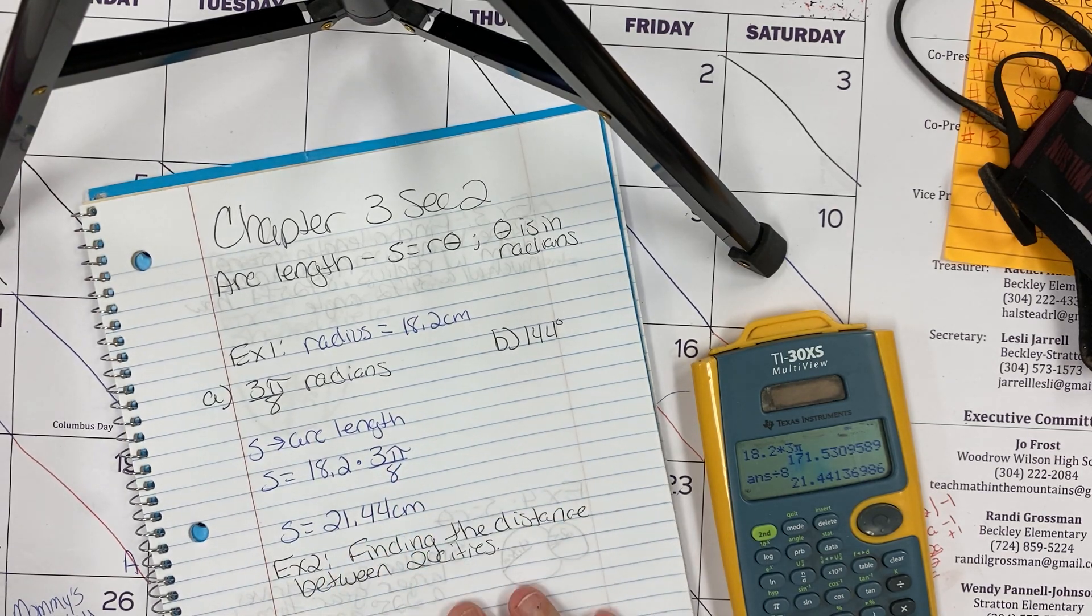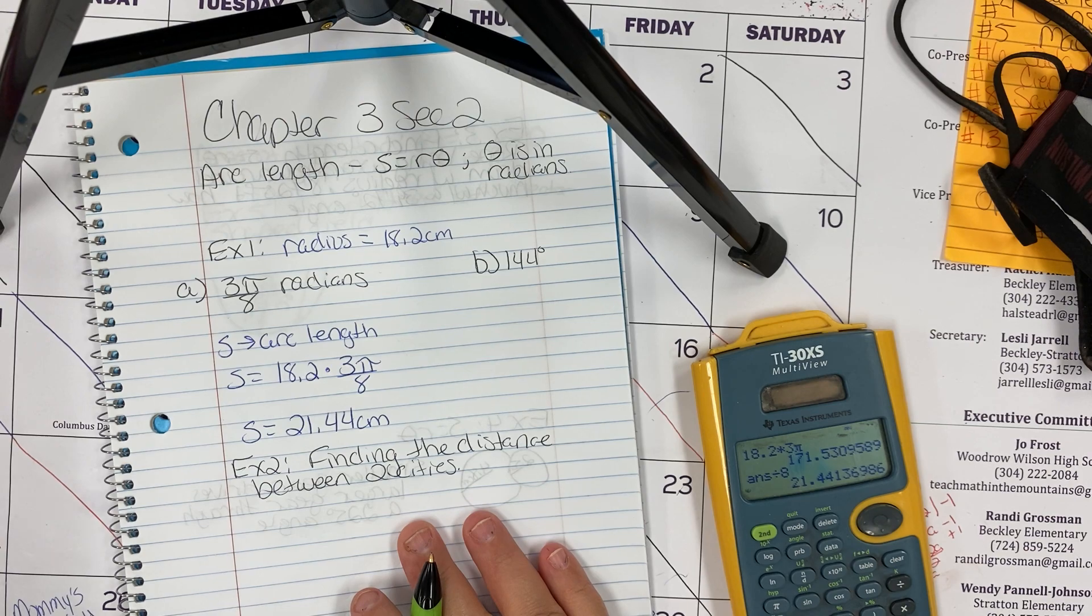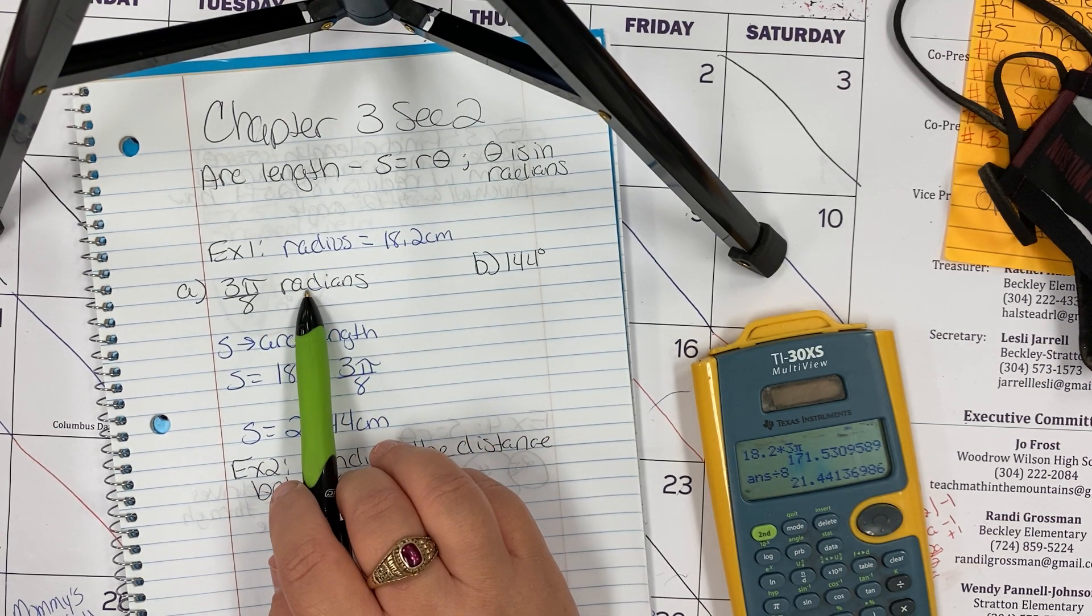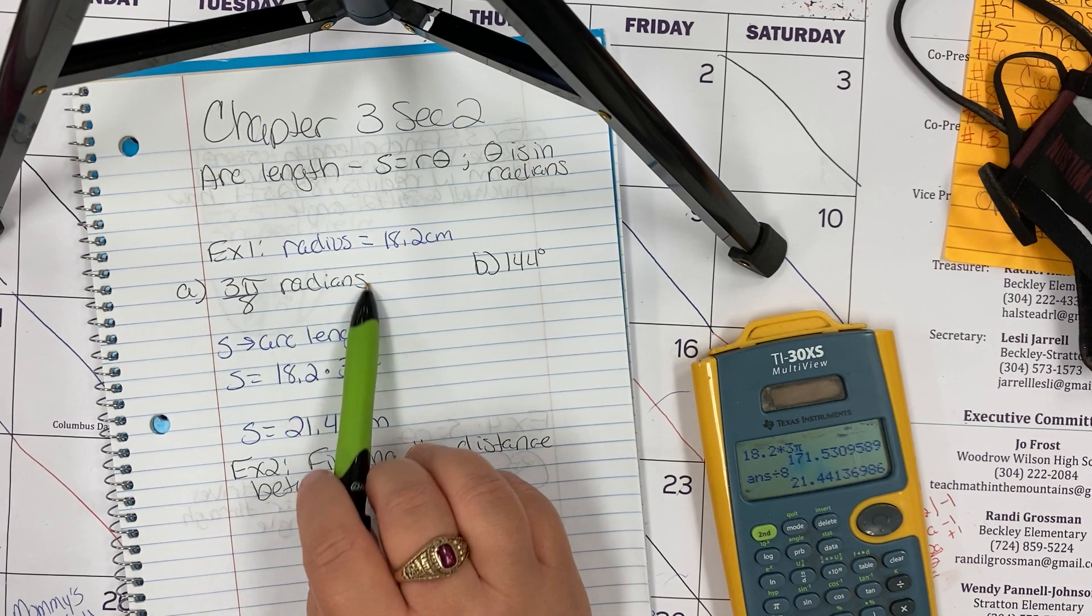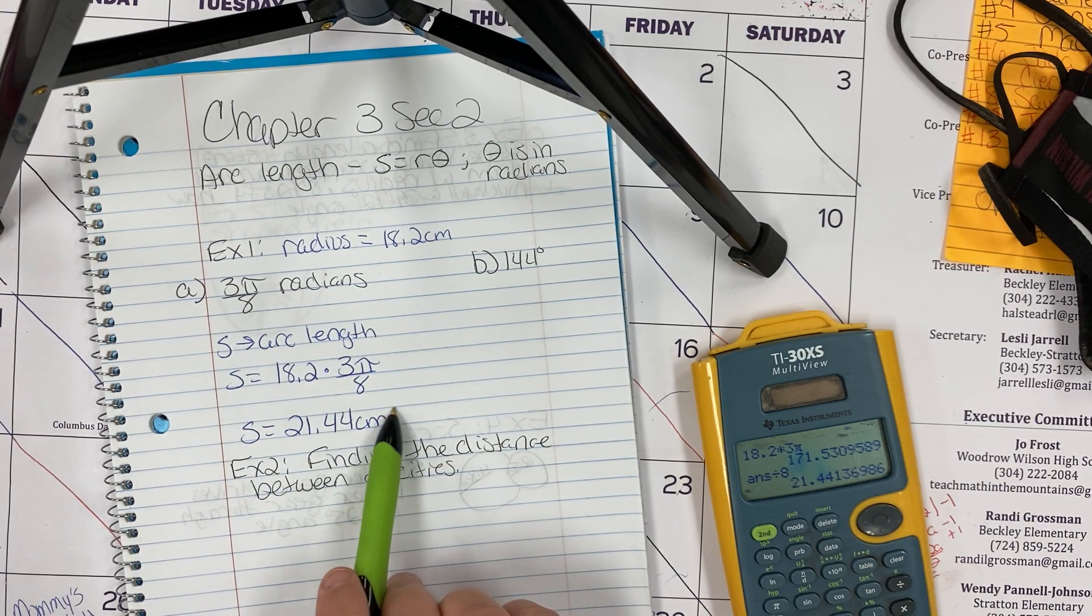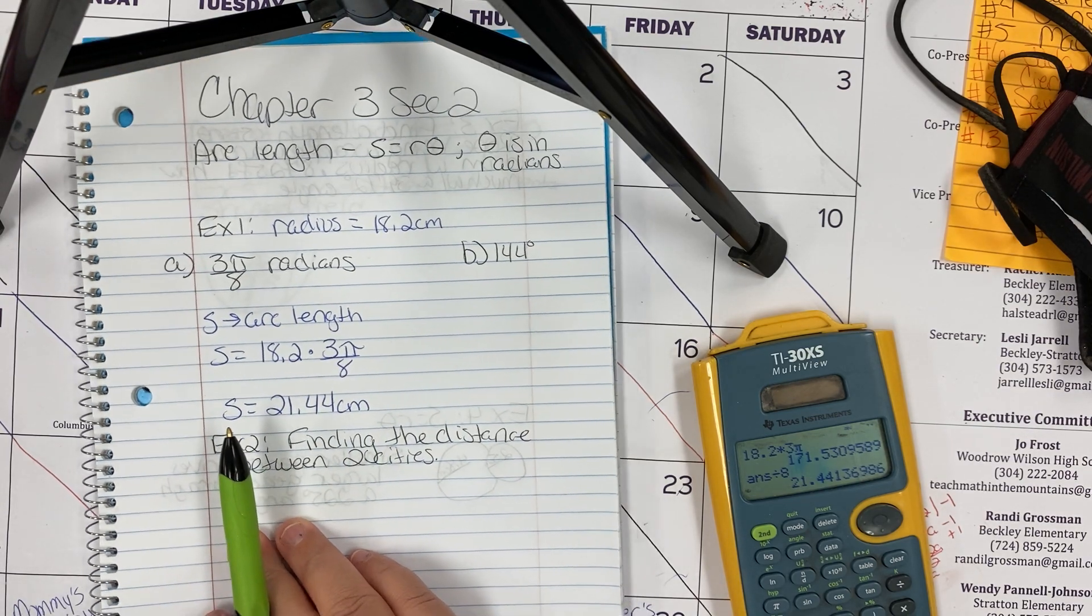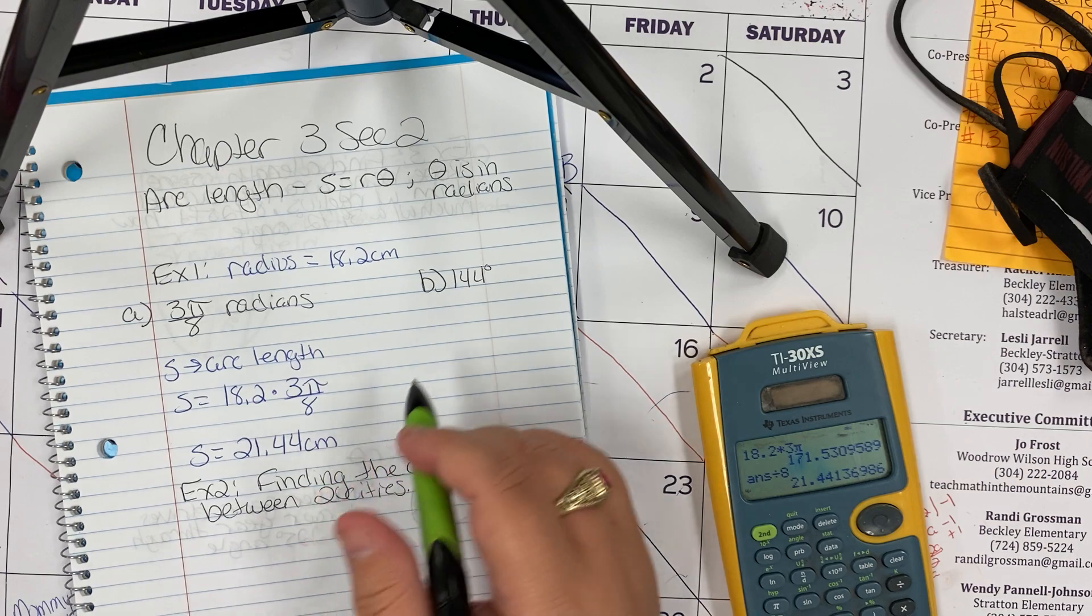centimeters. Since radians are technically not a unit of measurement like inches and feet, they kind of just disappear on their own, so that's why your final arc length is a length, so it has to be in centimeters this time.